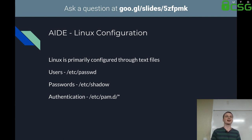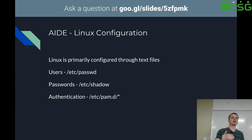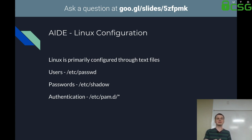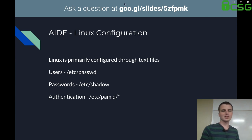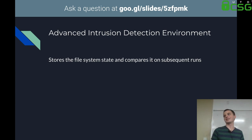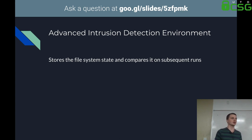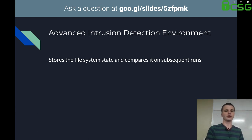AIDE — the Advanced Intrusion Detection Environment — kind of snapshots the file system state based on what you describe it to take a snapshot of, then compares it on subsequent runs. Looking at a simple config: we check the integrity of /etc/passwd — last access time, last change time, user permissions, and the contents of the file. When you run 'aide --check', you can see there are no differences between the database and the file system — that means no one has modified that file.